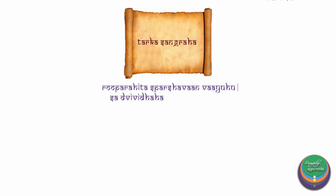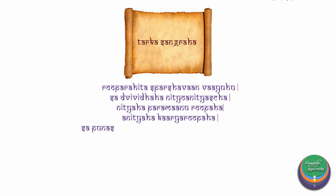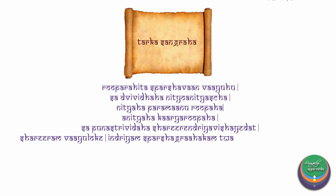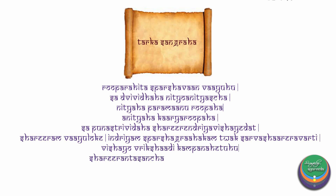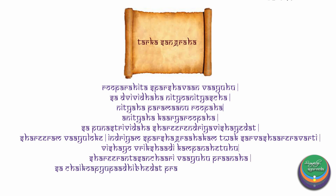According to Tarkasangraha: Rooparahita Sparashavaan Vayuhu. Sa Dvividaha Nithyo Anithya Shcha. Nithya Paramanu Rupaha. Anithya Kaadya Rupaha. Sa Punastra Vidaaha. Shadira Indriya Visha Vedat. Shadira Vaya Loke. Indriya Sparashagrahakam Tvag Sarva Shadira Aavarthi. Vishayo Brikshadi Kampana Hetuhu. Shadira Antara Sanchari Vayuhu Pranaha. Sa Chaiko Apyupadi Vedat. Pranapanadi Sanyam Labate. This sloka gives a very detailed explanation of Vayu Mahabhuta.